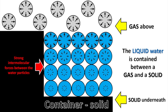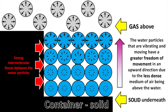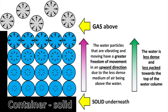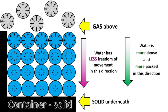Gas is above the water. The liquid water is contained between a gas and a solid — solid underneath. The water is less dense and less packed towards the top of the water column. Water has less freedom of movement in the downward direction. Water is more dense and more packed in a downward direction.